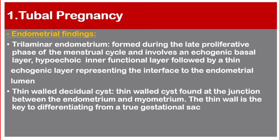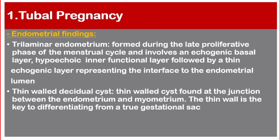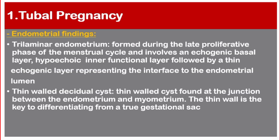We may also find a trilaminar endometrium, formed during the late proliferative phase of the menstrual cycle, involving an echogenic basal layer, a hypoechoic inner functional layer, followed by a hypoechoic layer representing the interface to the endometrial lumen. We may also find a decidual cyst, found at the junction between the endometrium and the myometrium — the decidual cyst is the key to differentiate from a true gestational sac.